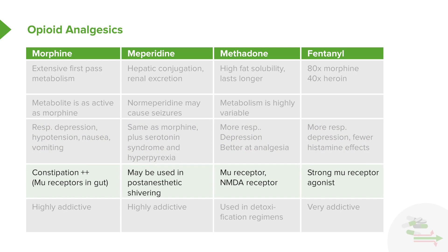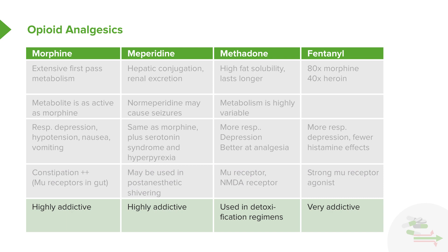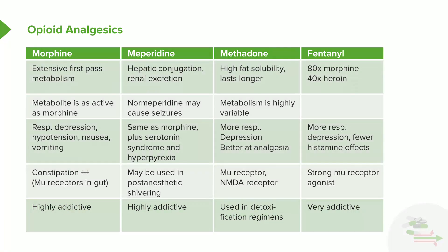In terms of other side effects, constipation is a real problem with morphine because of activity at the mu receptor in the gut. Meperidine, on the other hand, may be used in post-anesthetic shivering. Methadone is a mu receptor agent and also an NMDA receptor agent. Fentanyl is a strong mu agonist and is used in operative conditions. Morphine is highly addictive. Meperidine and fentanyl are very addictive as well. Methadone is singular in that it is often used in detoxification regimens. Have a look at this table and make sure that you understand the differences between these opioid analgesics.